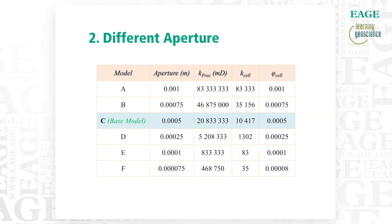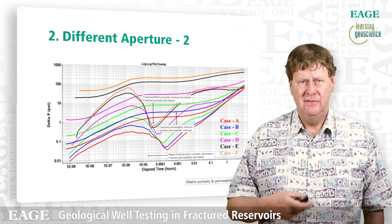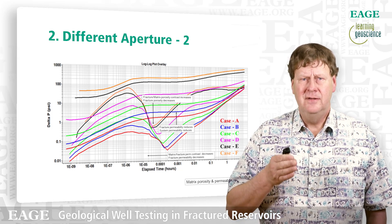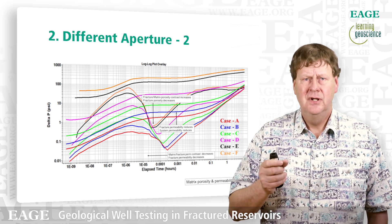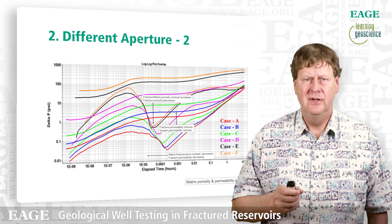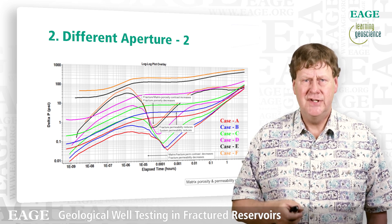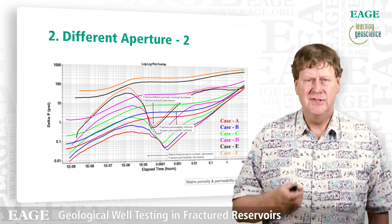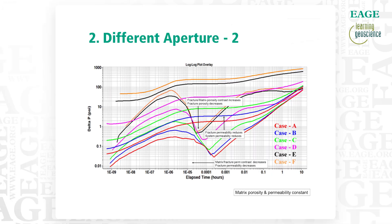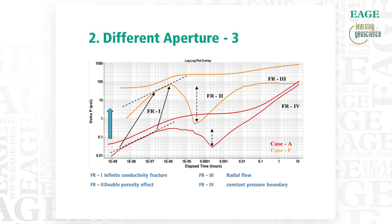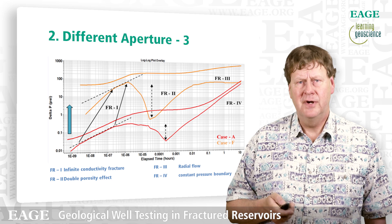With different models, we can set up models with different apertures and assign different properties. We can generate a set of type curves where the depth of the V is related to the storage ratio of fracture and matrix, and the time position is related to the permeability of the fracture and matrix. With systematic changes, you get a systematic set of derivative curves. The overall position of the derivative is lower when the overall system permeability is higher and raises when the overall permeability is lower. You can recognize the infinite-conductivity fracture at early time, the double porosity system, radial flow, and the constant pressure boundary at late stage.